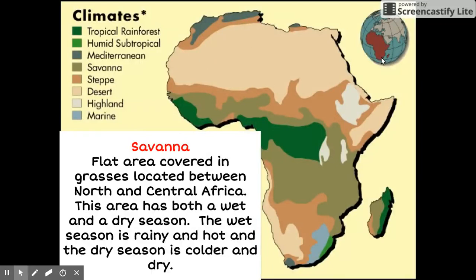Next is the savanna climate. You may recognize this type of climate from the Lion King. Savannas are flat areas covered in grasses located between North and Central Africa. This area has both a wet and a dry season. The wet season is rainy and hot, and the dry season is colder and dry.